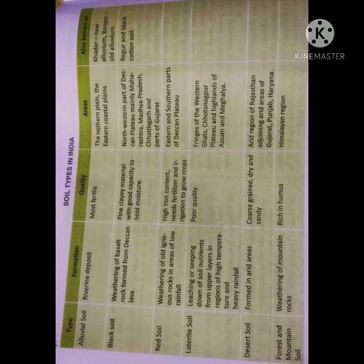Forest and mountain soil — formation by weathering of mountain rocks; rich in humus; found in the Himalayan region. These are the soil types found in India: alluvial soil, black soil, red soil, laterite soil, desert soil, and forest and mountain soil.